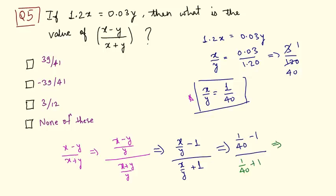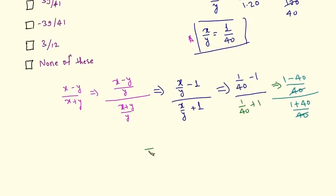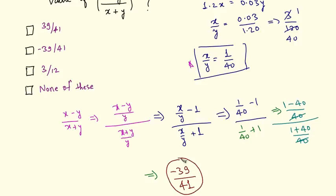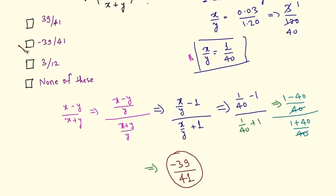This equals 1 minus 40 by 40, upon 1 plus 40 by 40 — simple cross multiplication. The 40s cancel out. This equals 1 minus 40 is minus 39, divided by 1 plus 40 is 41. So we have found our answer: minus 39 by 41, and this is the right answer.